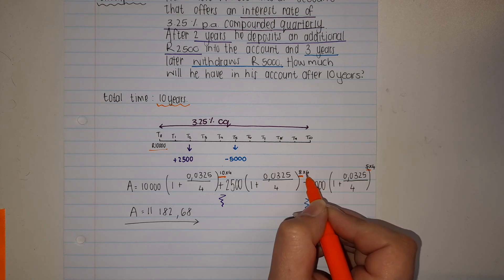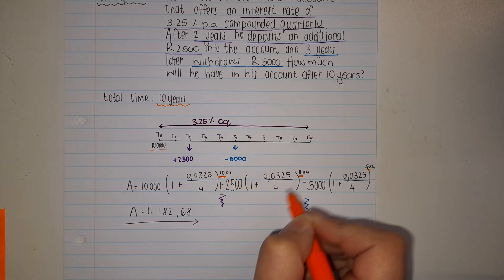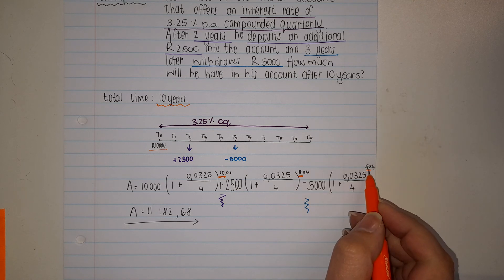Each time you work with your time, it's how many years are left. We started with 10 years left, then after 2 years we have 8 years left. Then in year 5, 3 years later, he withdraws 5000 rand. How much time do we have left? 5 years.